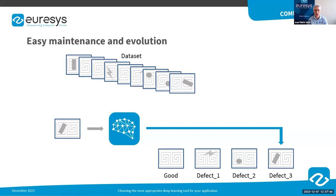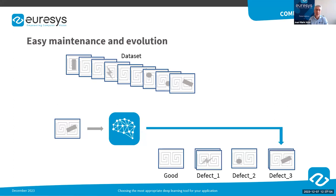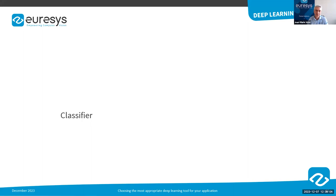Without the modification of a single line of code. If you need to apply the same evolution to an application based on conventional algorithms, you have to be prepared to rewrite a significant part of your code. There are basically three families of deep learning tools: classifiers, segmenters, and object detectors.